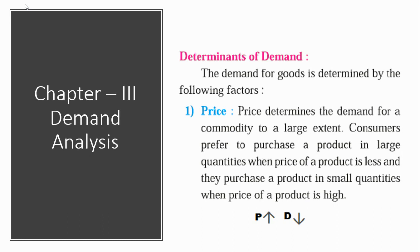The first factor we get from the definition itself, that is the price — price of the commodity. The consumer, meaning the person who consumes, prefers to purchase a product — a commodity or goods — in a large quantity when the price is less. This is how the consumer always behaves.